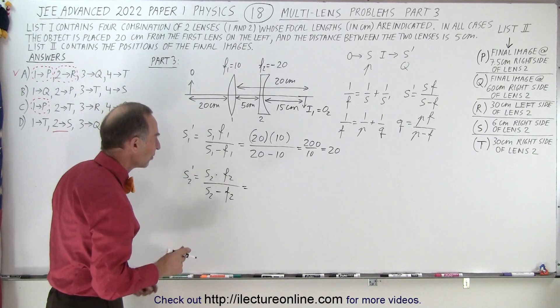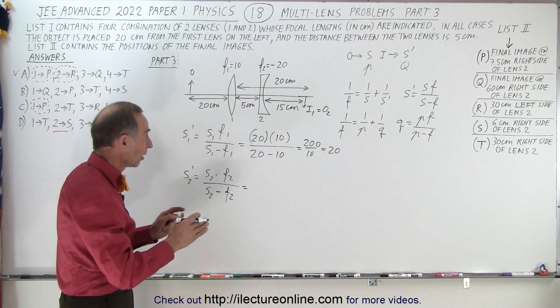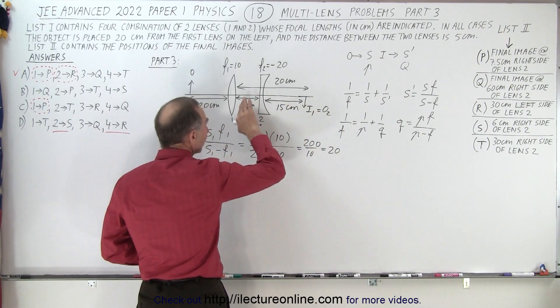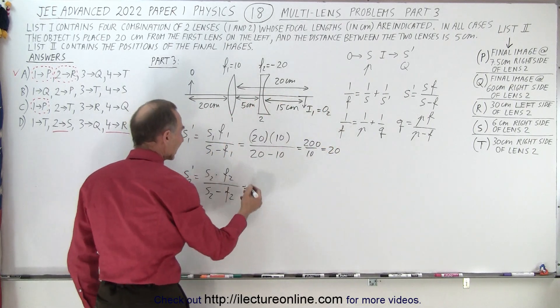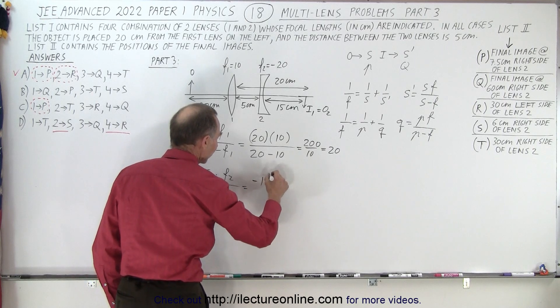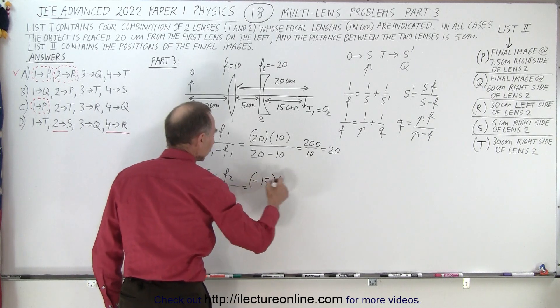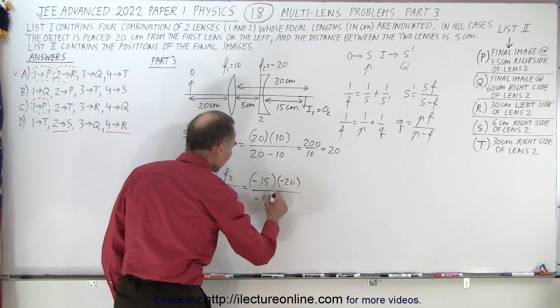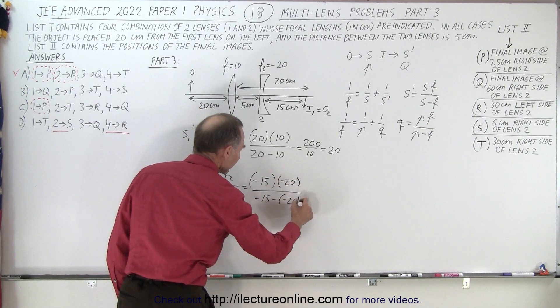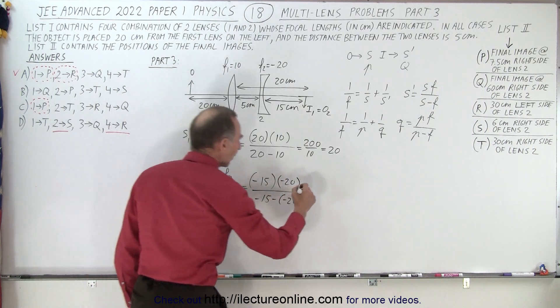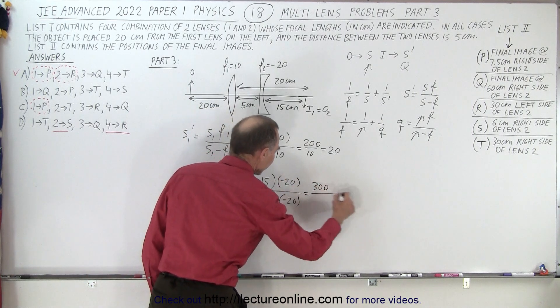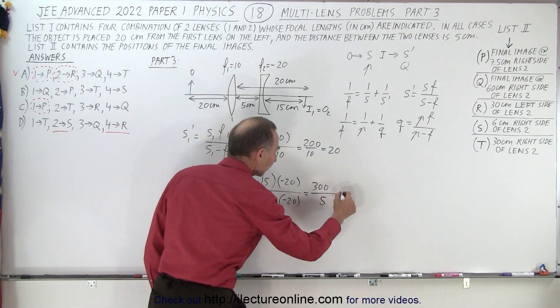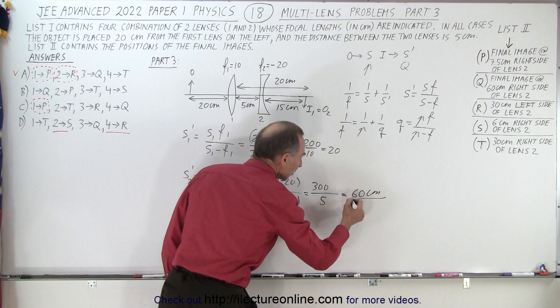Alright, so S2 is now the object distance of image 1, which became object 2 relative to lens 2. It's behind the lens, that's a negative object distance. So minus 15 times the focal length of minus 20, divided by S2 which is minus 15 minus the minus 20. So this becomes a positive 300 divided by minus 15 plus 20, gives us plus 5, which is positive 60 centimeters.